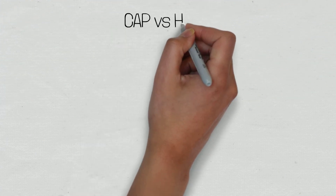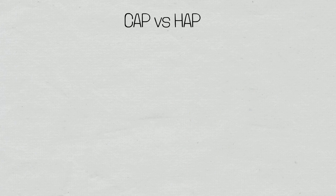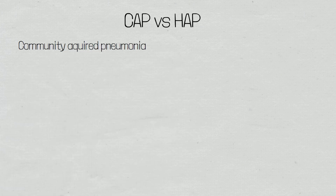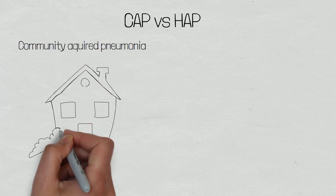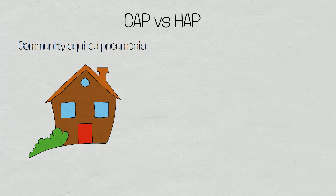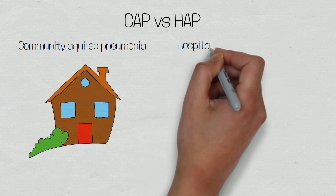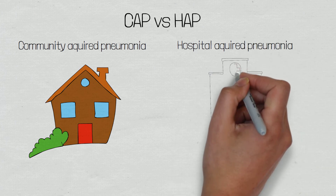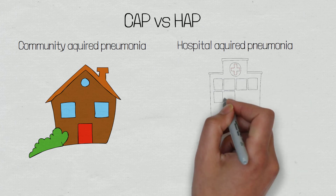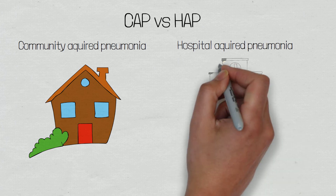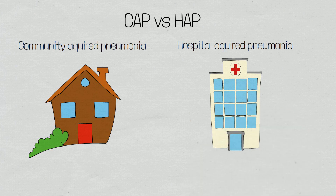Pneumonia can also be categorised by the setting in which the patient has contracted the infection. Community acquired pneumonia is where the patient has contracted pneumonia outside of a healthcare facility and is the most common. Hospital acquired pneumonia is where the patient has contracted the illness in a healthcare environment, usually when they are already being treated for another illness. This is less common but can be more severe, as patients are already unwell and the pathogens in hospital can be resistant to antibiotics.